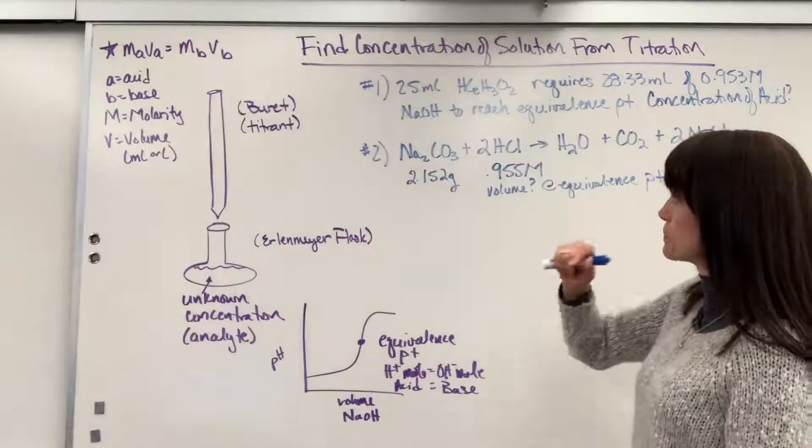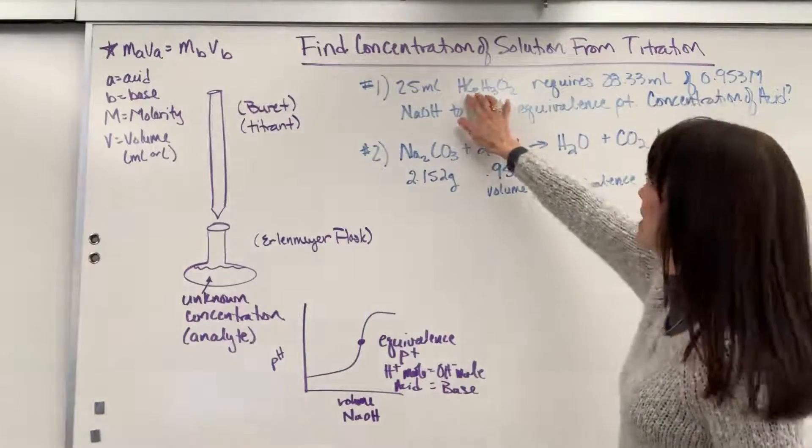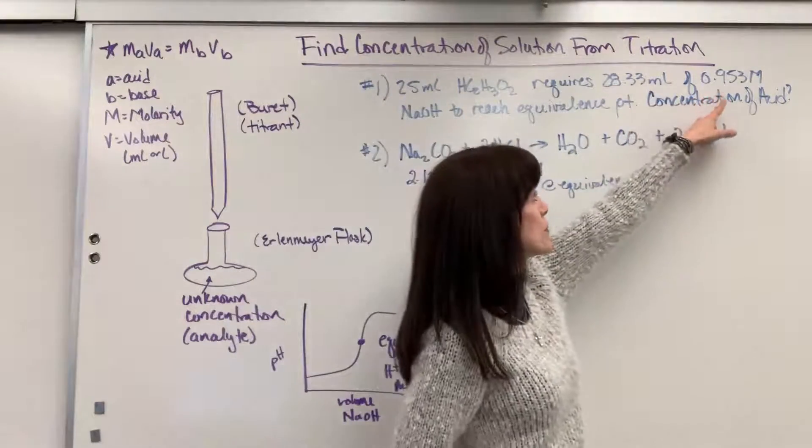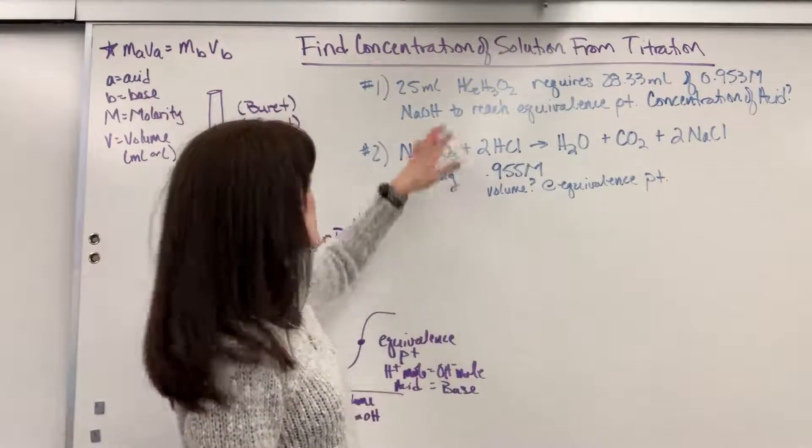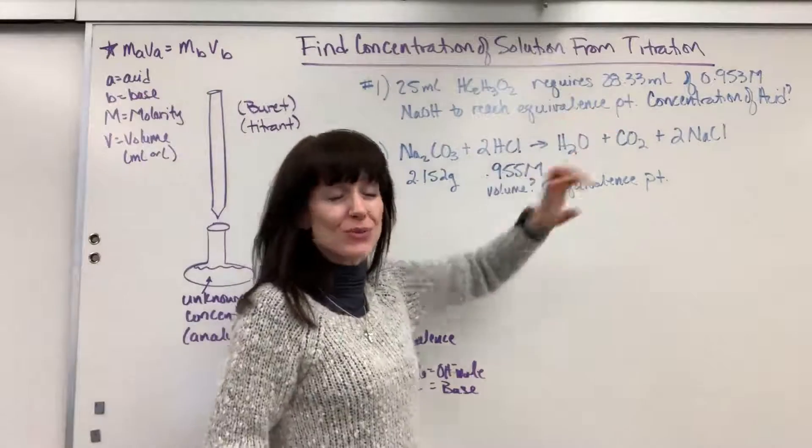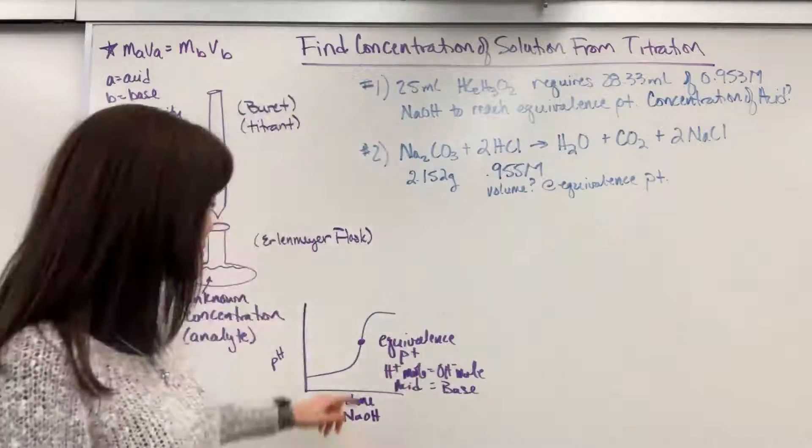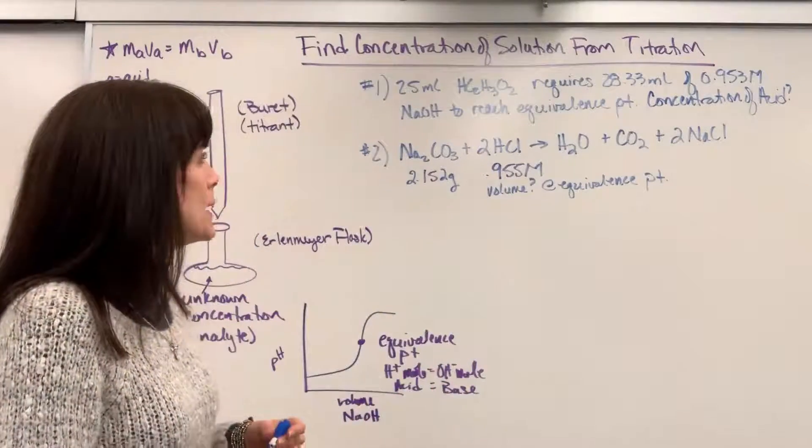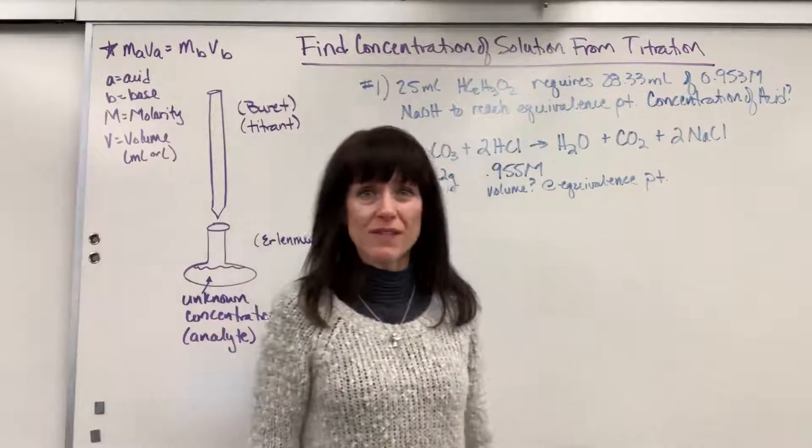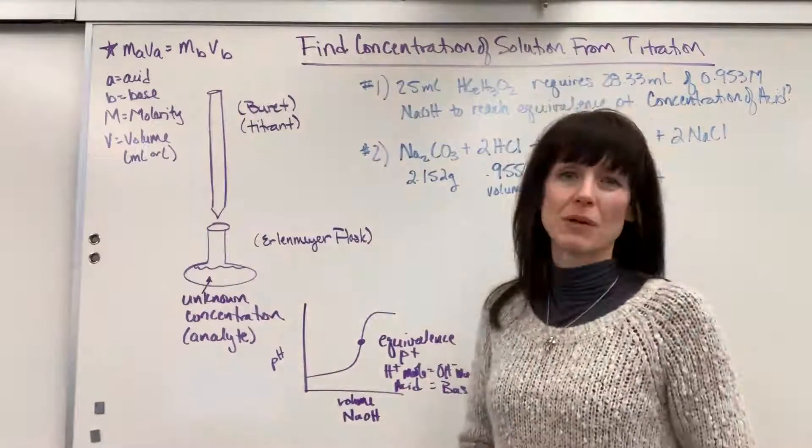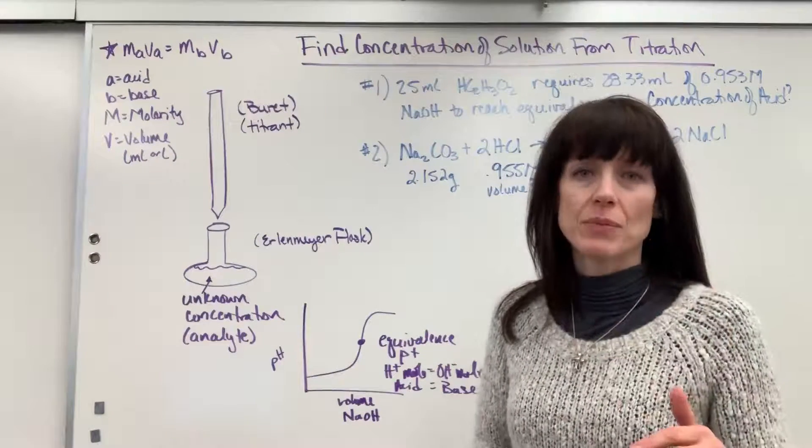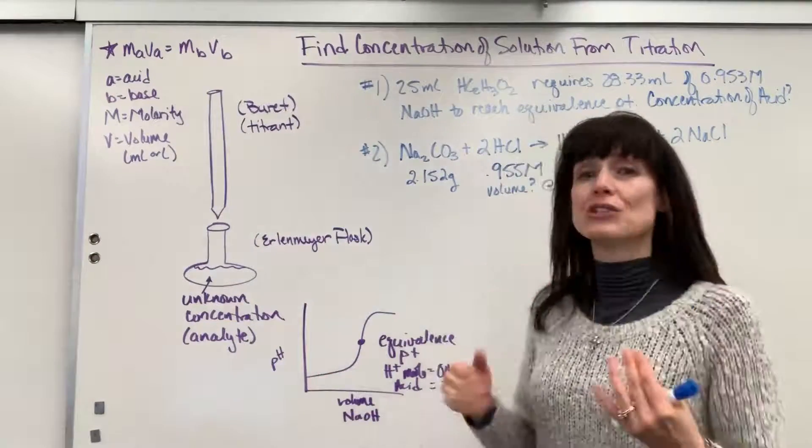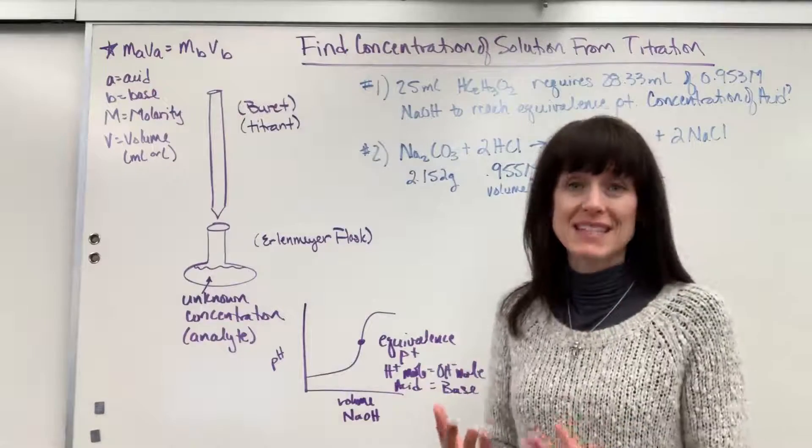So let's take this problem number one. It says that we have 25 mils of acetic acid. It requires 28.33 mils of a 0.953 molar concentration of sodium hydroxide to reach the equivalence point. So whenever you see that term equivalence point, you know you live right here. What's so special about that is the moles of the acid equal the moles of the base. So it's asking what is the concentration of the acid.